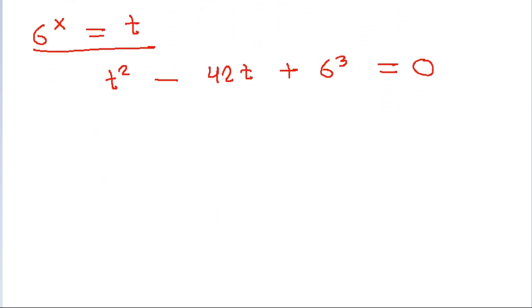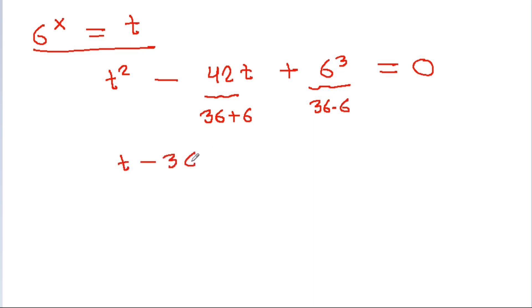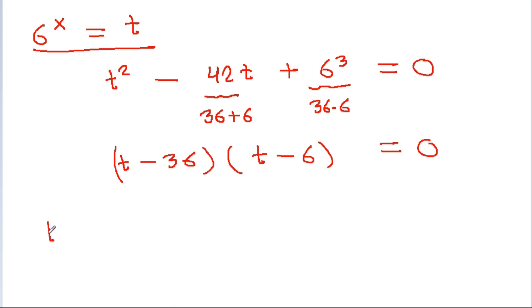Since 42 is 36 plus 6 and 6 cubed is 36 times 6, we can factor the quadratic. Solving gives t equal to 36 and t equal to 6.